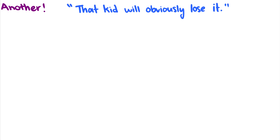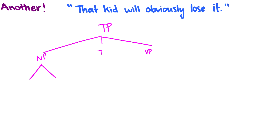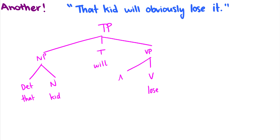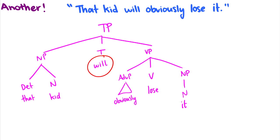Let's do another one: 'that kid will obviously lose it'. We start every sentence with a TP breaking into a noun phrase, T, and a verb phrase. 'That kid' is our noun phrase — a determiner and a noun. Then we have 'will', which is an auxiliary, so we're going to have 'will' under T. In the verb phrase, 'lose' is the head, 'obviously' will be an adverb abbreviated with a triangle, and 'it' is our noun phrase complement that breaks down into a noun. Notice we don't have any plus or minus past in our tense because we have that modal.